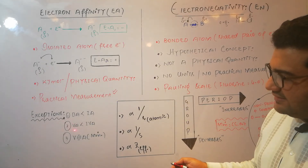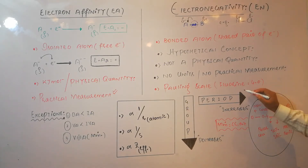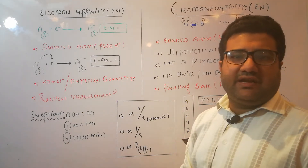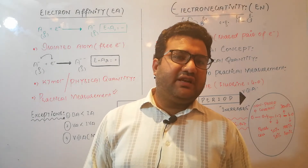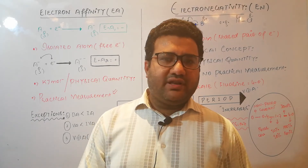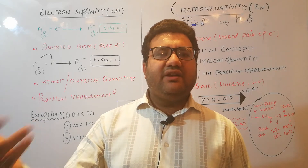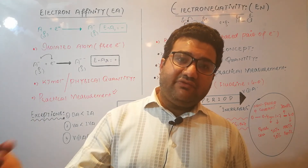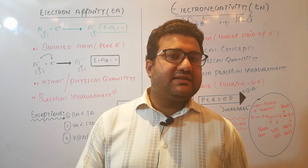Similarly, group 5A has lesser electron affinity than group 4A. Group 8A (noble gases) is at the extreme right of the periodic table, so by normal trend they should have the maximum electron affinity, but noble gases have the minimum electron affinity value. An important point: even the first electron affinity of noble gases is positive, because they have no attraction for new electrons — their octet is already complete. If you try to add even the first electron to a noble gas atom, energy must be provided, so the first electron affinity is positive.